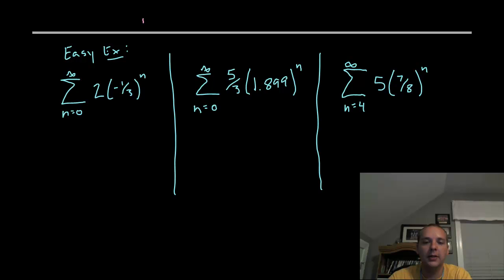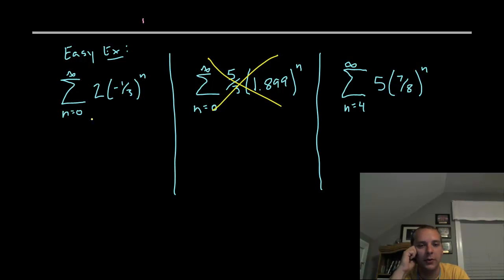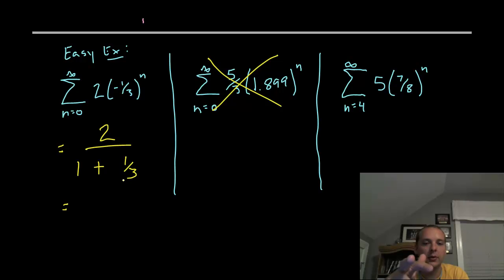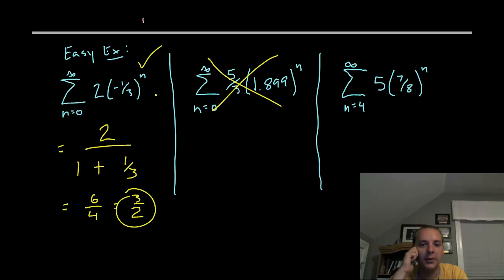Going back to the first example — two times negative one-third to the n — the second example didn't converge so it's not applicable. For the first one, the sum is 2 over (1 minus negative one-third), which gives 2 over (1 plus one-third), which is 2 over four-thirds. Taking the reciprocal gives six-fourths, which reduces to three-halves. So this series converges and its sum is three-halves.